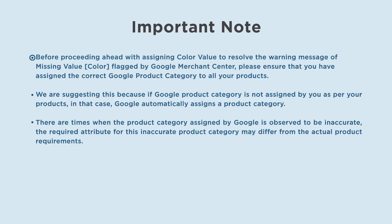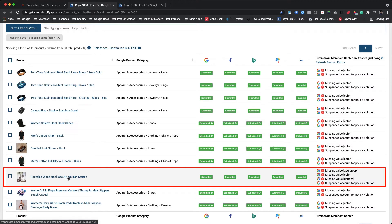Before proceeding with assigning color value to resolve the missing value color warning flagged by Google Merchant Center, please ensure that you have assigned the correct Google product category to all your products. We are suggesting this because if the Google product category is not assigned by you, Google automatically assigns a product category. There are times when the category assigned by Google is inaccurate, and the required attributes for this inaccurate category may differ from the actual product requirements. Let's take a look at one use case we created for a demo.